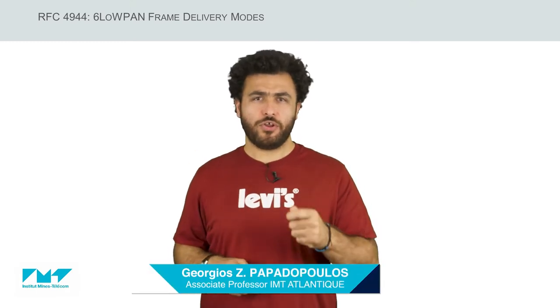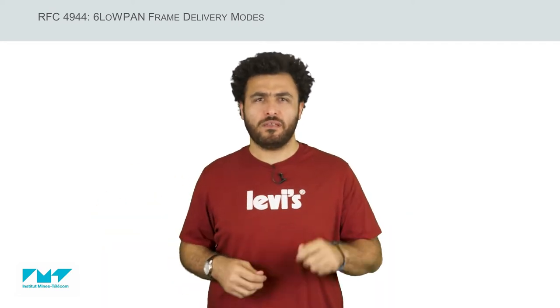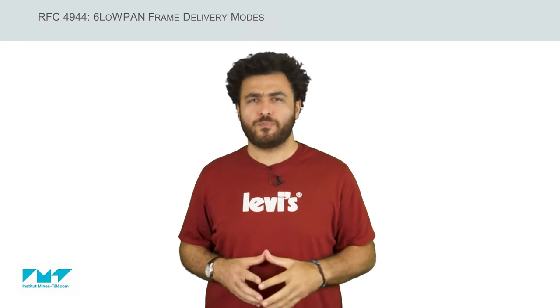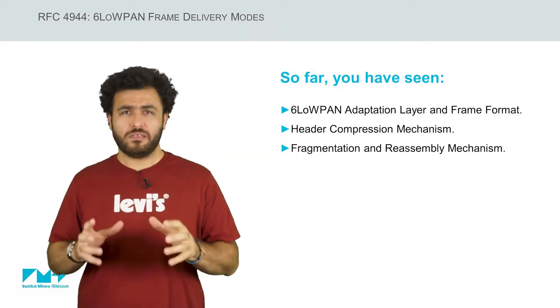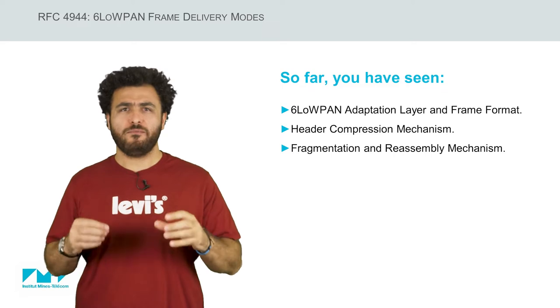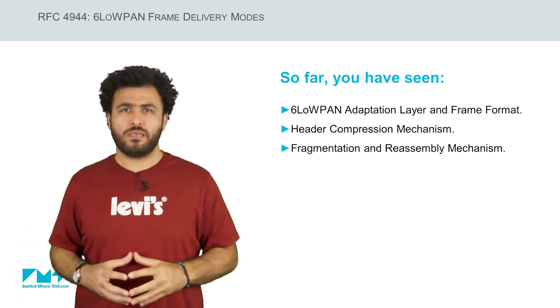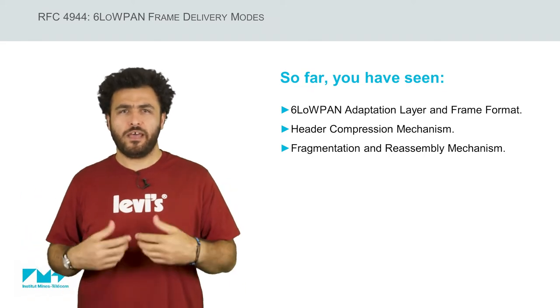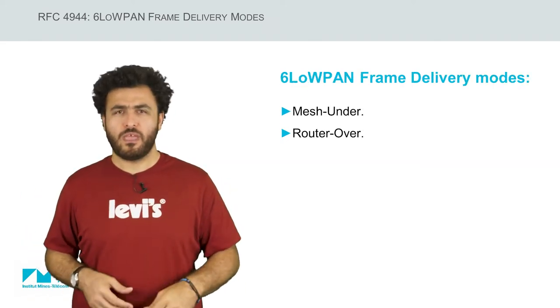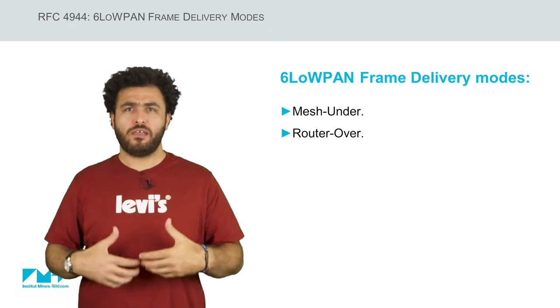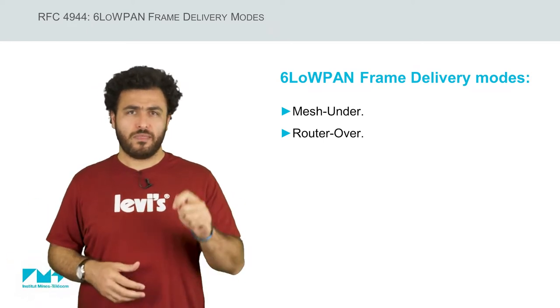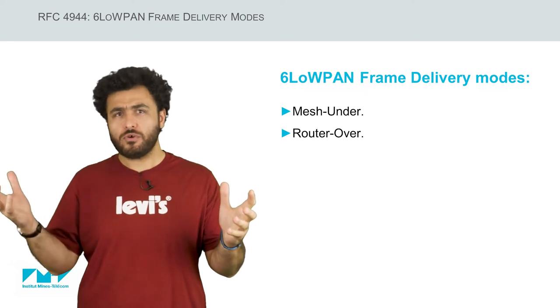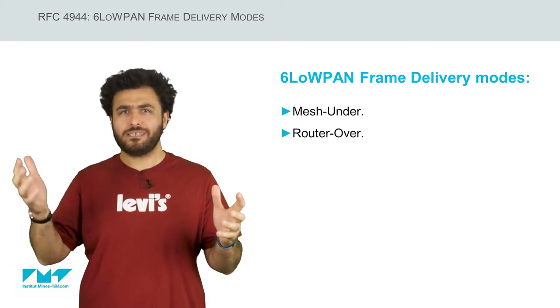Hi, I am Gheorghios Papadopoulos and welcome to this video on 6LoWPAN frame delivery modes defined in RFC 4944. So far you have seen the 6LoWPAN adaptation layer and frame format as well as the header compression and fragmentation and reassembly mechanisms defined in RFC 4944. Today we will continue with 6LoWPAN frame delivery modes: the mesh under and the route over, or per-hop fragmentation and reassembly mode.